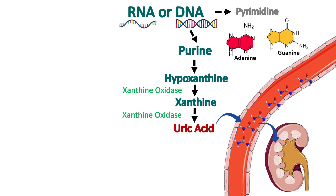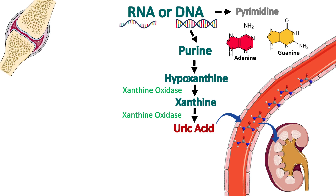In this video, let us learn about the medicines that we use to treat gout. The main player in gout is uric acid. Gout has an acute phase and a chronic phase. In the acute phase, the patient presents with joint pain and inflammation.